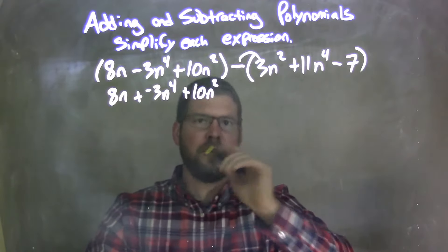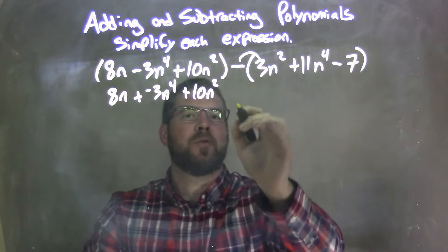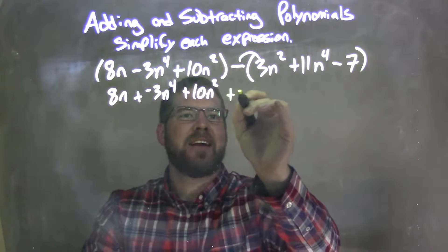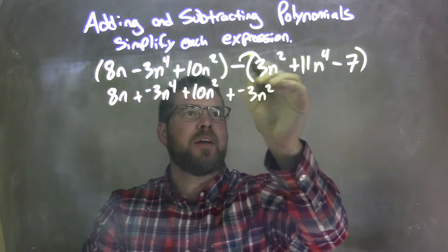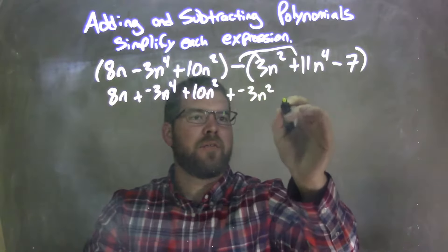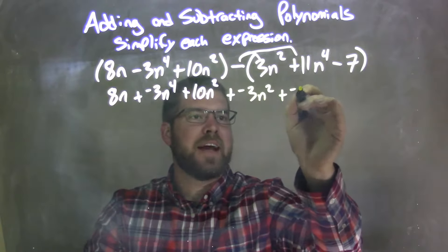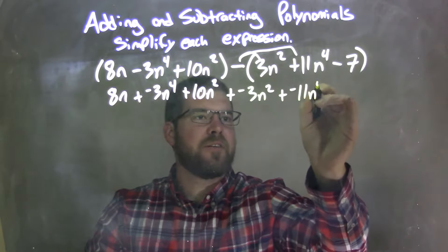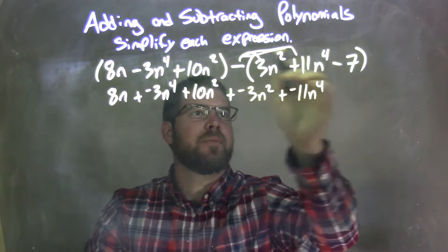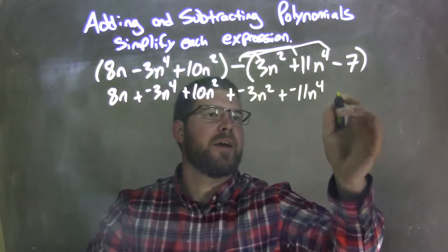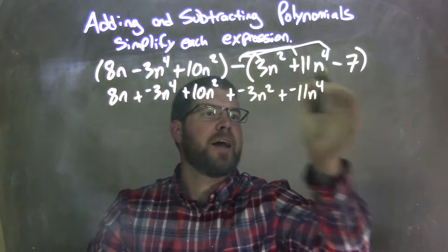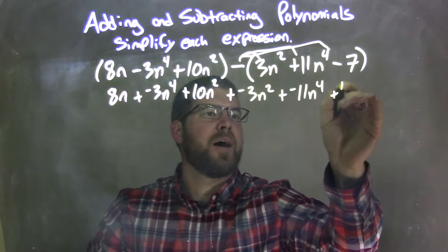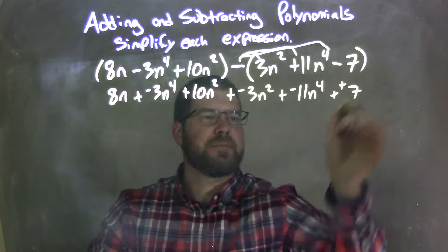So subtracting 3n squared is adding a negative 3n squared, then distribute the minus sign over here, we have plus a negative 11n to the 4th, and do it again over there — two negatives makes it plus a positive 7.